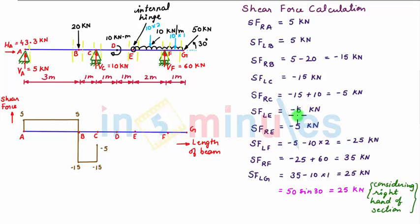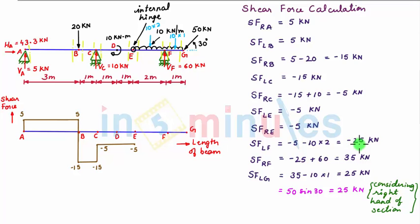Now shear force towards the left of E is minus 5 kN. So at point E, we have minus 5 kN shear force and let us connect it with point C by a horizontal line, denoting that shear force is constant between point C and E. Now shear force towards the left of F is minus 25 kN. We see between point E and F we have uniformly distributed load, so variation of shear force between point E and F will be linear. Let us connect with an inclined straight line.